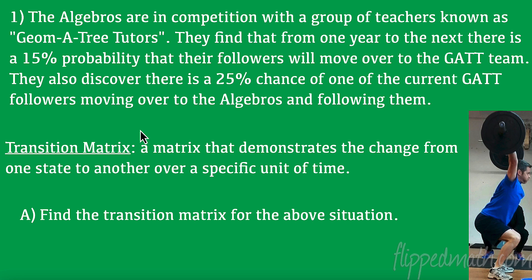We're going to do one problem — lots to it obviously — and then I'm going to have you try one. This problem: the Algebras are in competition with a group of teachers known as GAT, the Geometry Tutors. They find that from one year to the next there's a 15% probability that their followers will move over to the GAT team, and a 25% chance of a current GAT follower moving over to the Algebras.